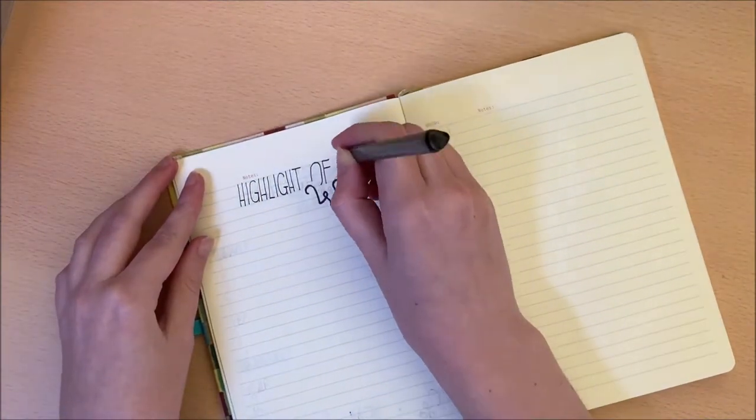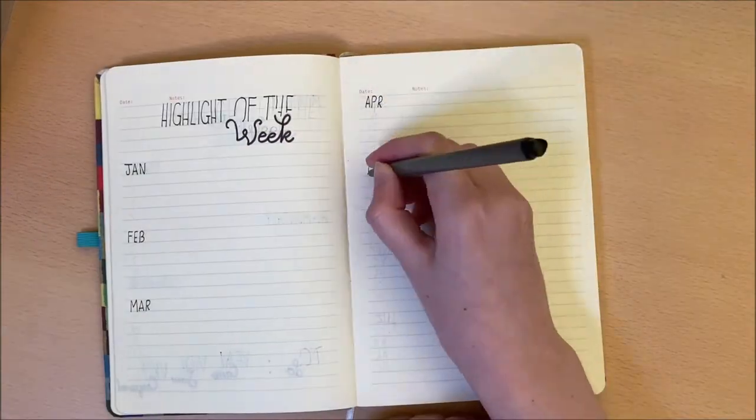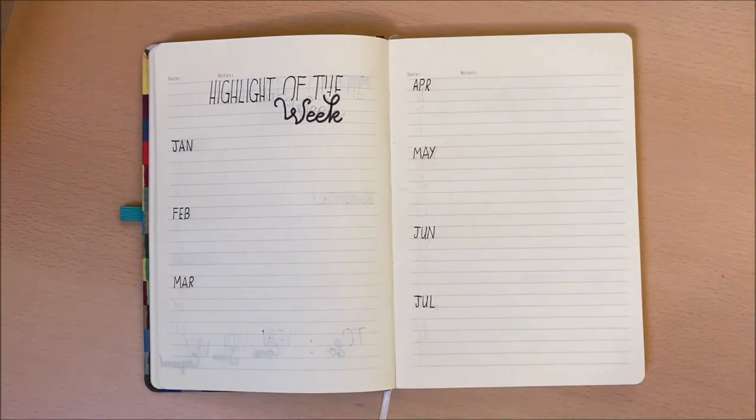As well as that I'm adding a highlight of the week page. I plan on using this journal for the month of January to July, so that is why I only have 30 weeks included.